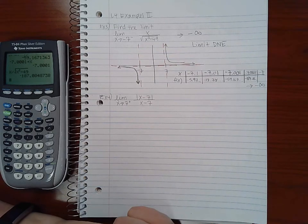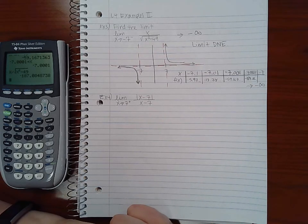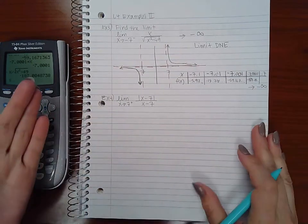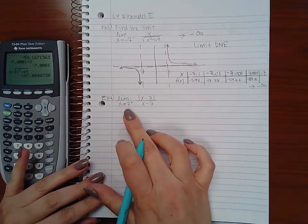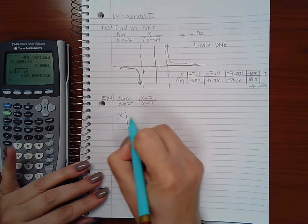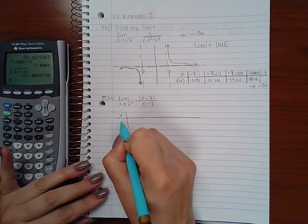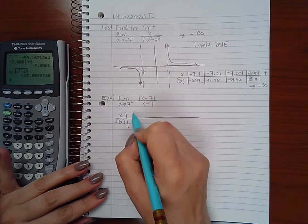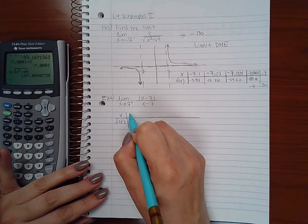So whether you use a table, the numerical approach, or you use a graph, the graphing approach, you do need to justify how you determine that the limit doesn't exist. Simply stating the limit doesn't exist does not suffice on a test. Similarly with this problem I would do the same thing, but now I'm approaching positive 7 on the right. So that means I would be picking 7.1, positive 7.01.